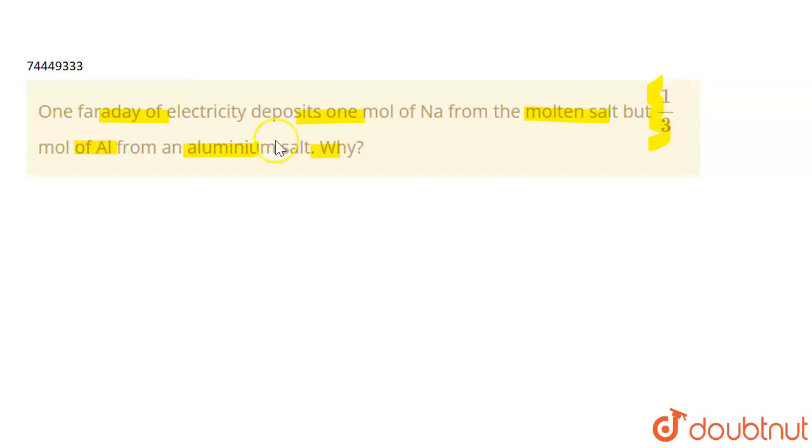If we look at the reaction in the sodium case, Na plus plus one electron gives Na. Look at the aluminum plus 3, so three electrons are taken by the aluminum.